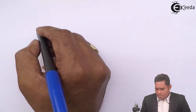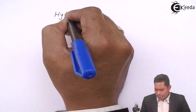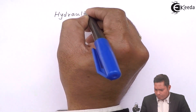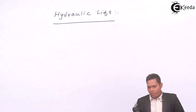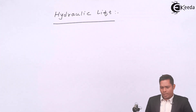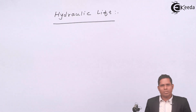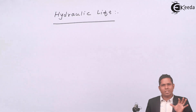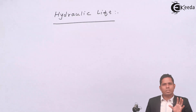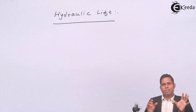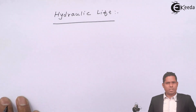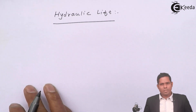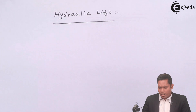Students, we will discuss about hydraulic lift. Hydraulic lift — it is like a hydraulic press. It is a device which has two vertical cylinders connected to each other.